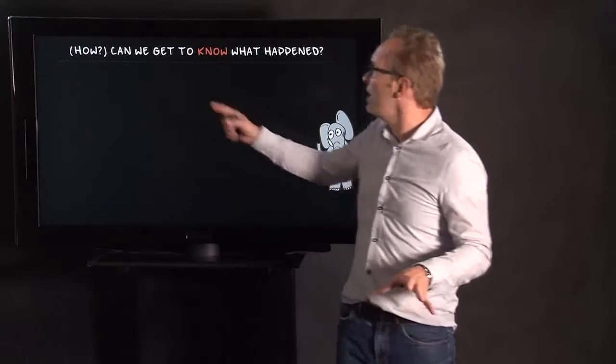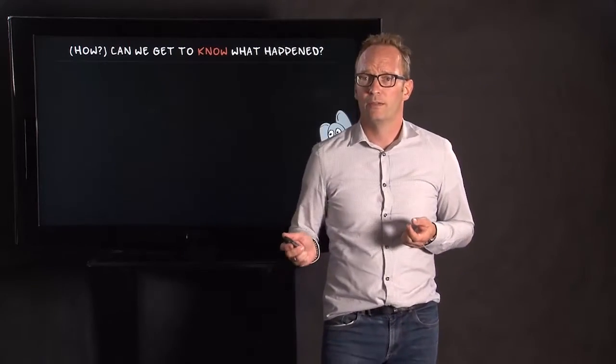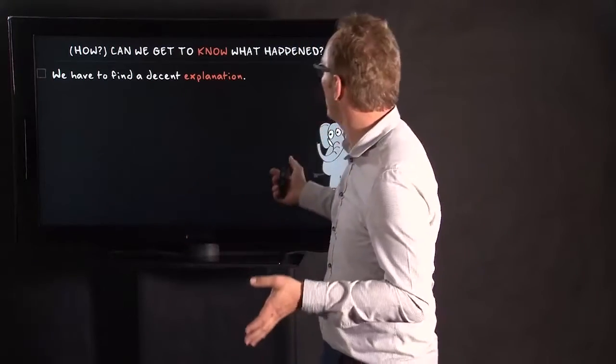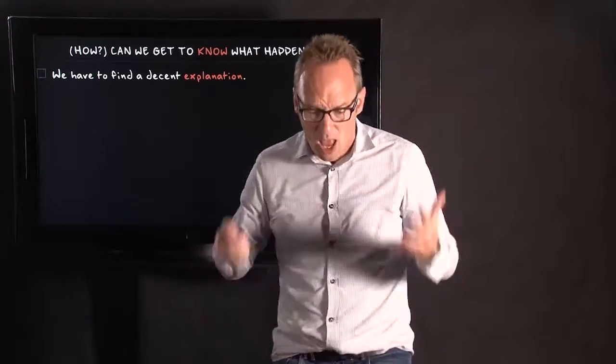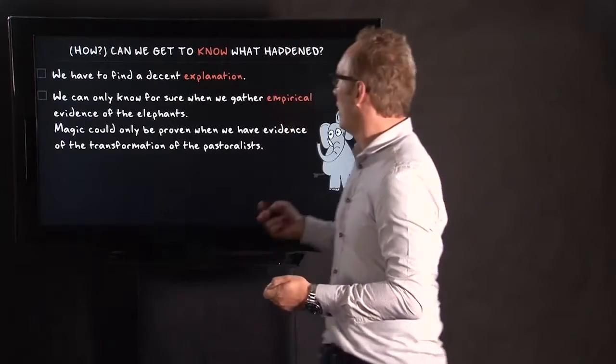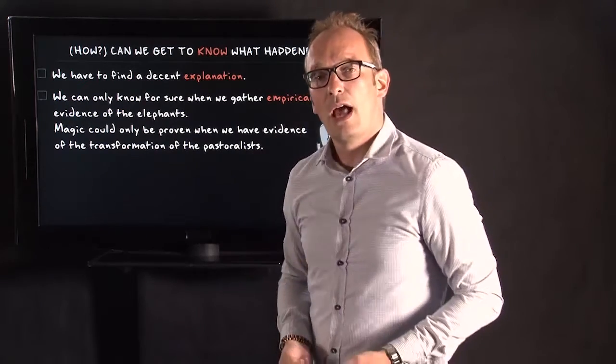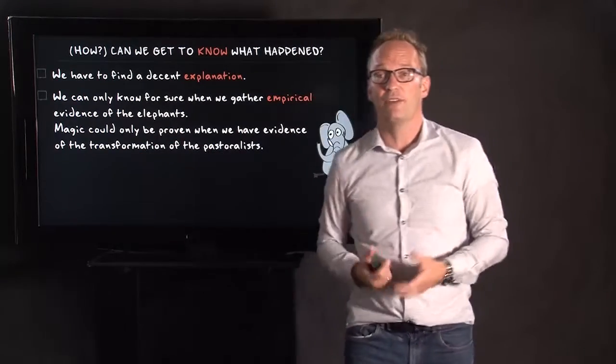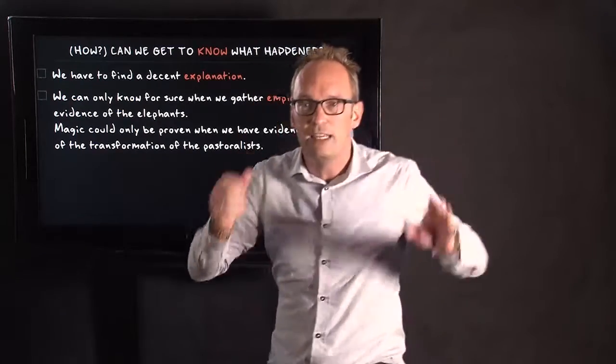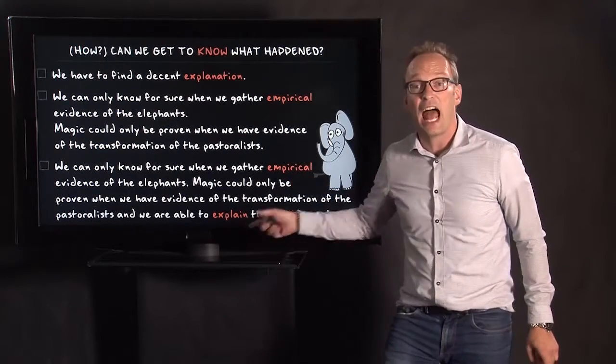Because how can we get to know what happened? Can we get to know what happened? And how can we? And that's epistemology. And one way we can answer this question is by saying well we have to find a decent explanation. We have to find a decent explanation for the magic occurring. For instance. Or we need empirical evidence. Empirical evidence of what? Well of the elephants. And the magic can only be proven when we have evidence of the transformation of the pastoralist. Maybe we need eyewitnesses or CCTV or whatever.